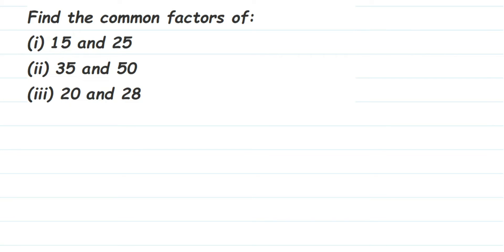The easiest way of finding factors when the number is small — like 15, 25, 35, 50, which are all smaller numbers in this question — is to check from the 1 to 10 table, whether these numbers are divisible or go into those tables. If you have a higher number like a three-digit number, then you have to check beyond 10 and look at different tables.